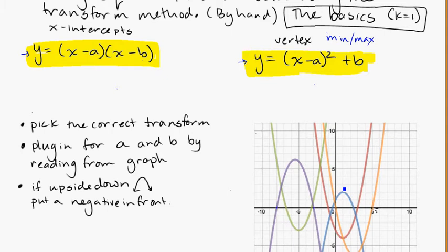So it's important to look for what you know and decide whether to use the intercepts or whether to use the vertex. And that's the first step to actually pick the correct transform. And once you do you're just going to plug in for A and B. Where A in this case is x-intercept 1.